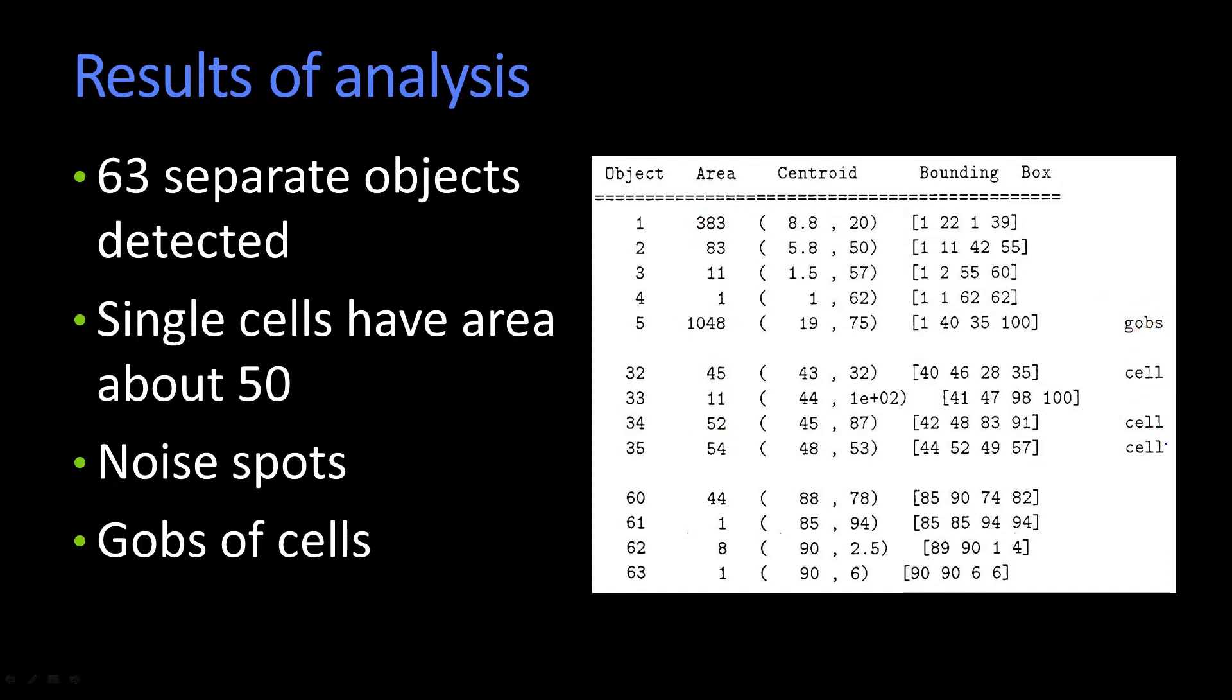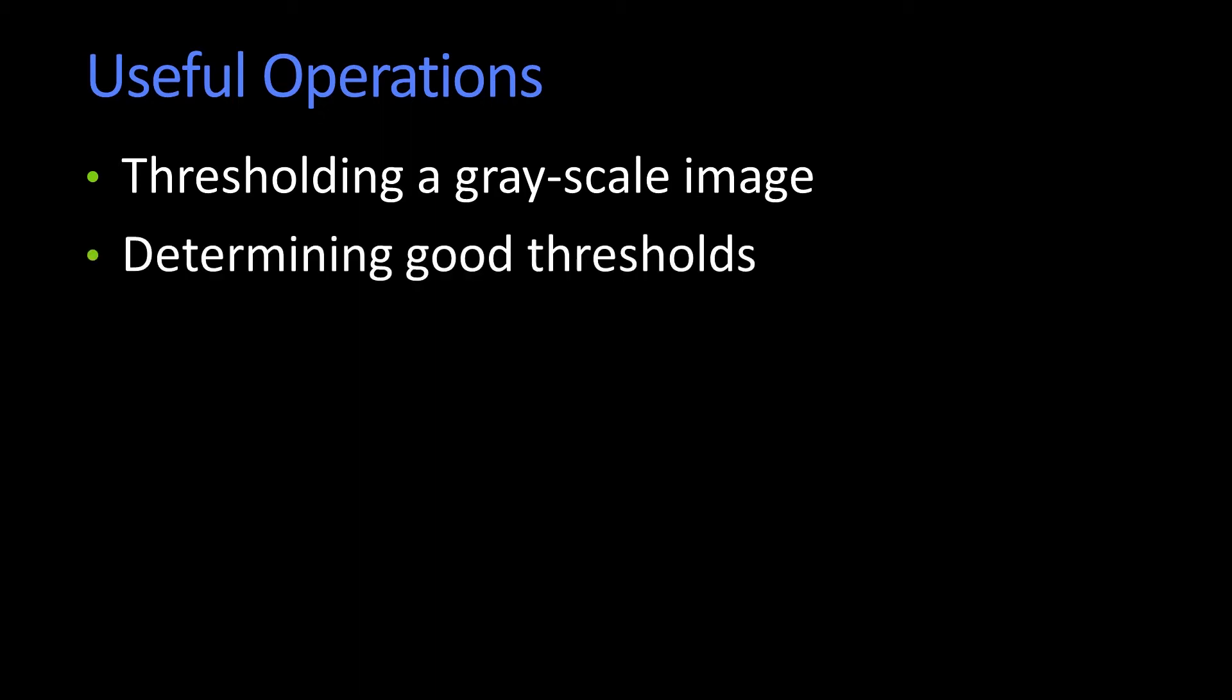So we're going to do some binary image operations to do that. And what kind of operations are there? Well, first one we're going to talk just a little bit about is thresholding. Because in some sense, in order to get a binary image, you have to go from a color or grayscale image that has continuous values, or lots of values, to something that just has two, zero and one. So determining a threshold is always a challenge.